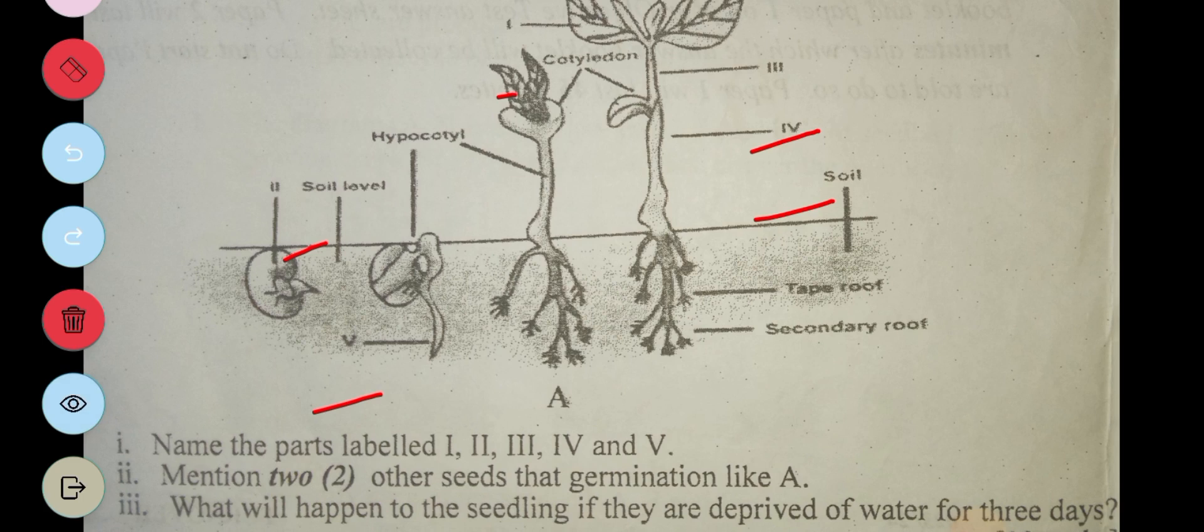Then part three says: what will happen to the seedling if they are deprived of water for three days? So they will wilt and then die.